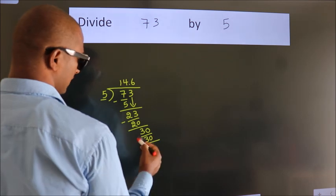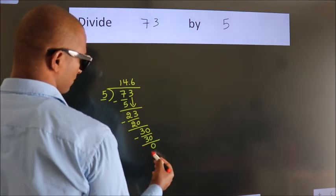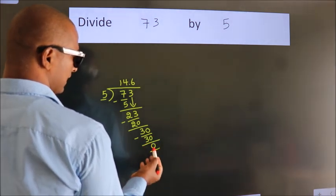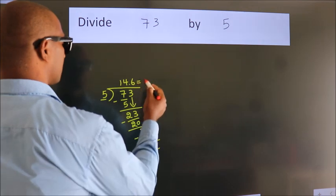Now we subtract. We get 0. We got remainder 0. So this is our quotient.